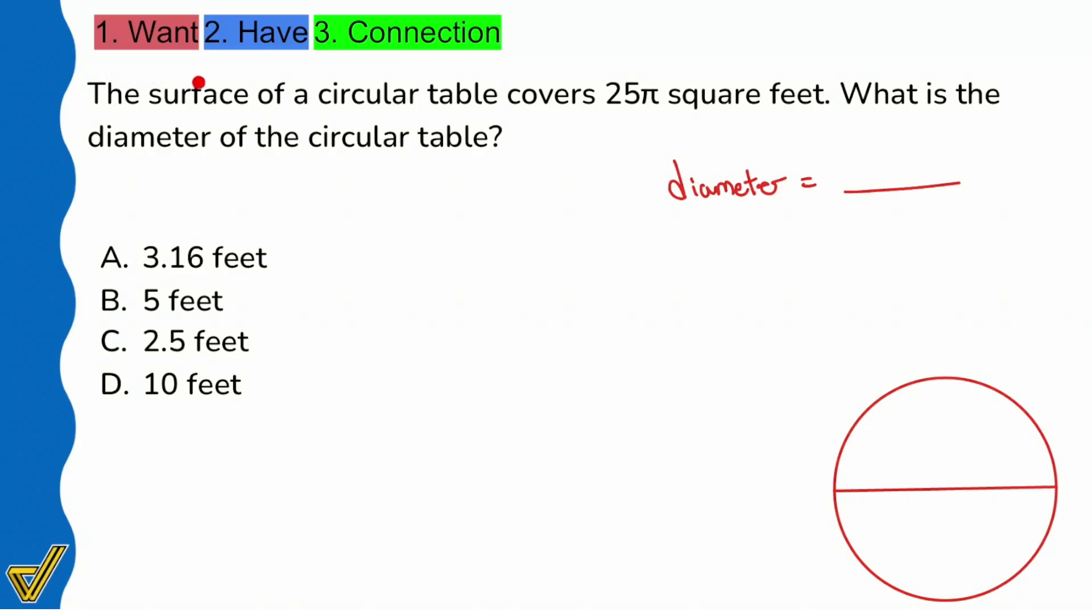So what information do we have? We see that the surface of a circular table covers 25π square feet. What's the diameter? So it looks like we have almost no information to work with, but we have all the information that we need. This is cool because we see that we know we're talking about a circle, we are looking for its diameter.